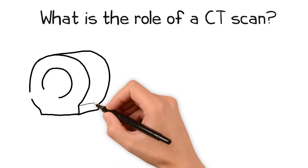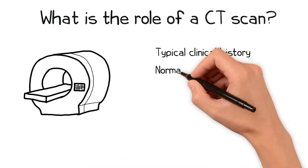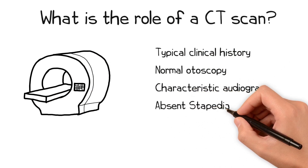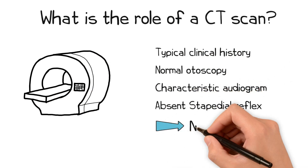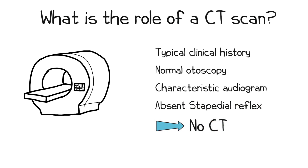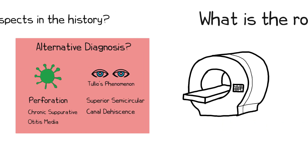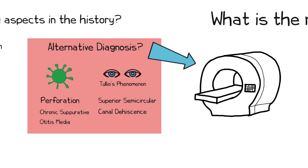A clinical history typical of otosclerosis, combined with normal otoscopic findings, characteristic audiometry results, and absent stapedial reflexes, is usually enough to confirm the diagnosis. However, a CT may be considered if there are atypical elements of the history to confirm the diagnosis and rule out any alternatives.